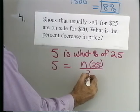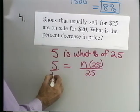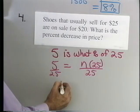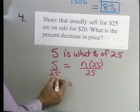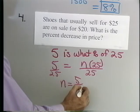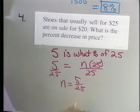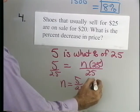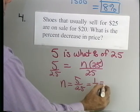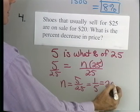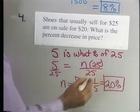Divide both sides by 25, and I end up with N is equal to 5 divided by 25, because these divided out. 5 divided by 25 is 1 fifth, and that's going to be 20% when I change to a percent.